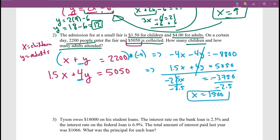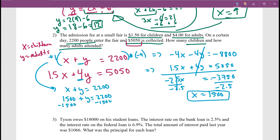Now to find the number of adults, use the first equation: 1,500 plus y equals 2,200. Subtracting 1,500 from both sides gives y equals 700. So 700 adults and 1,500 children came to the fair.